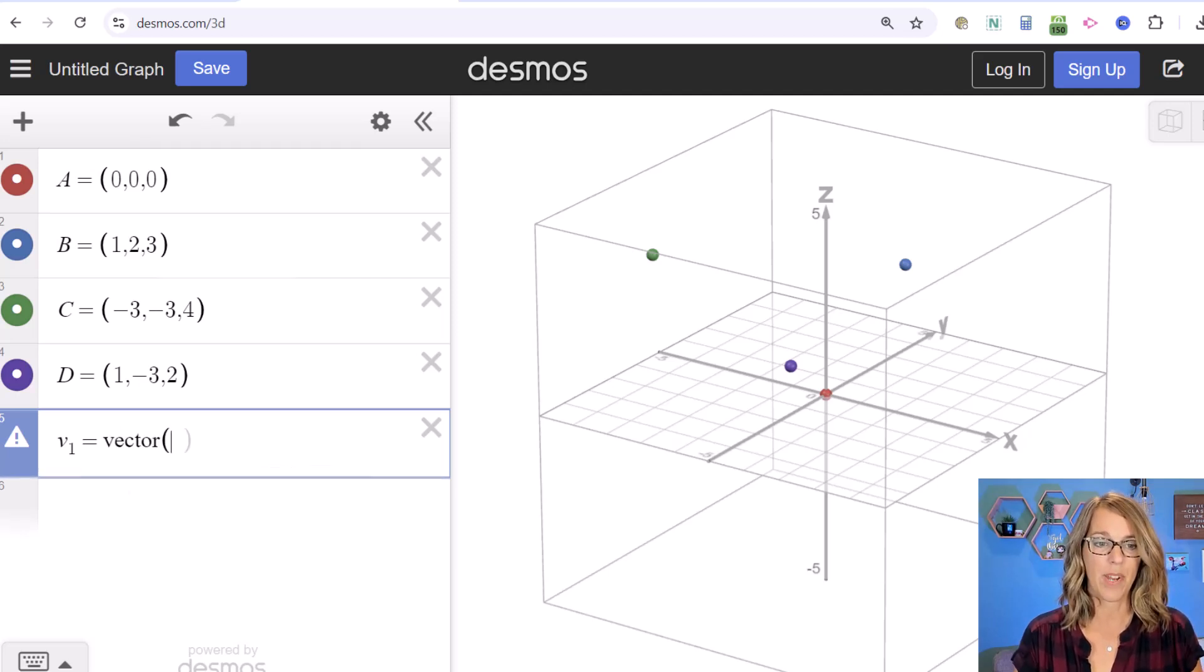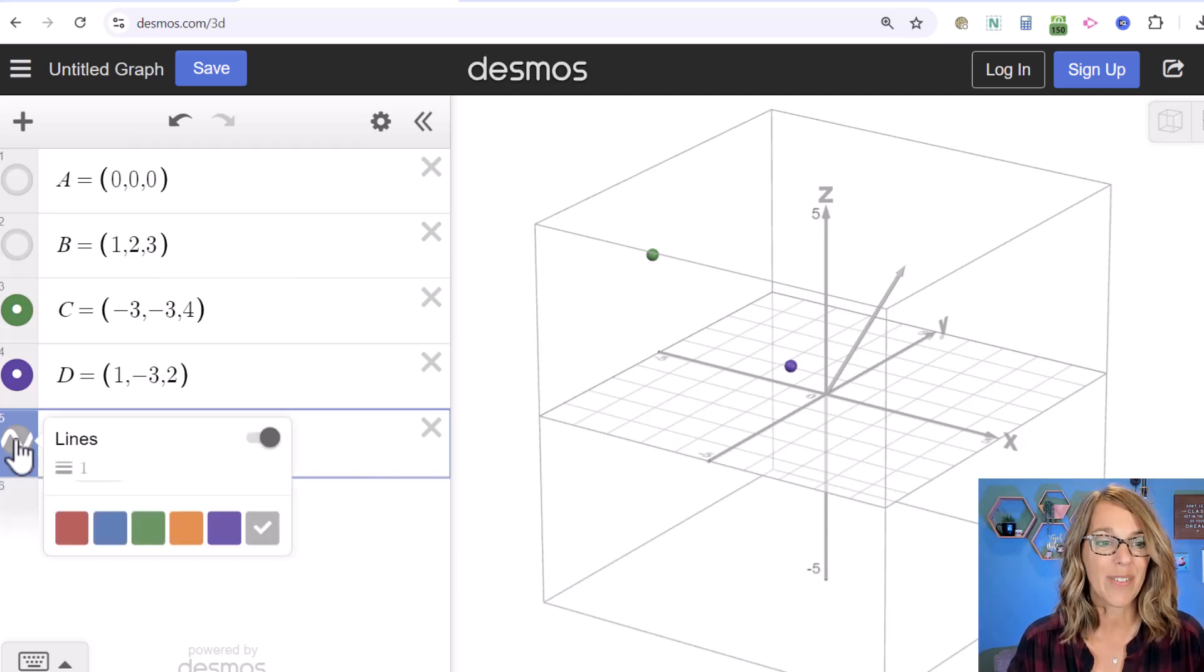I'll type v followed by one, which will automatically subscript to v₁. v₁ equals vector(initial point, terminal point), so I'll do vector(A, B). I don't need points A and B displayed anymore, so I'll remove them. The gray is hard to see, so I'll change this to orange.